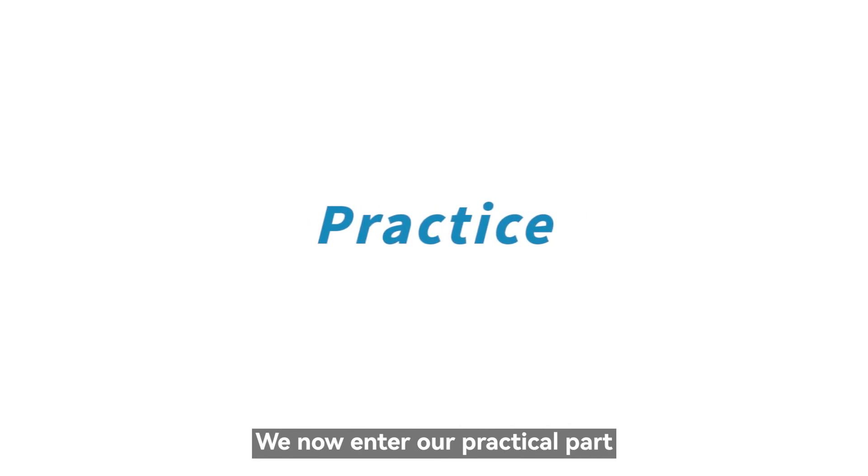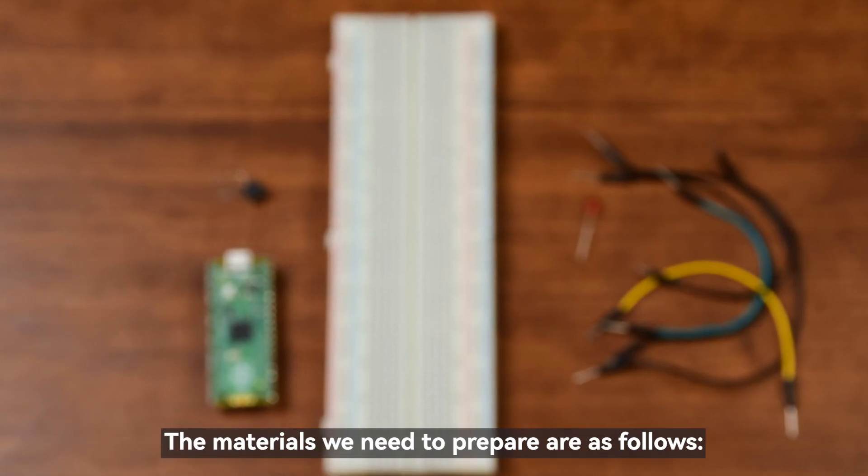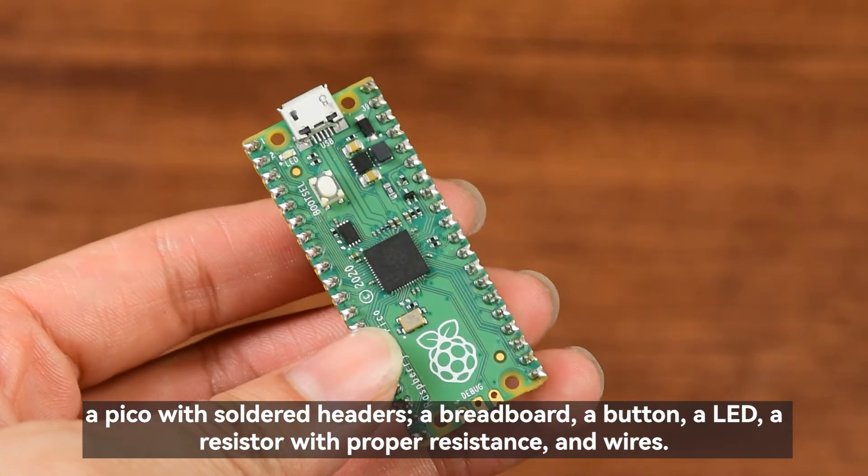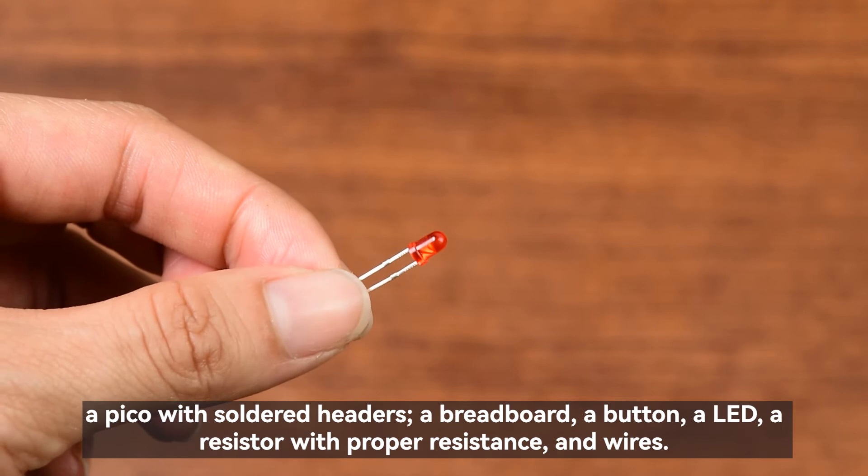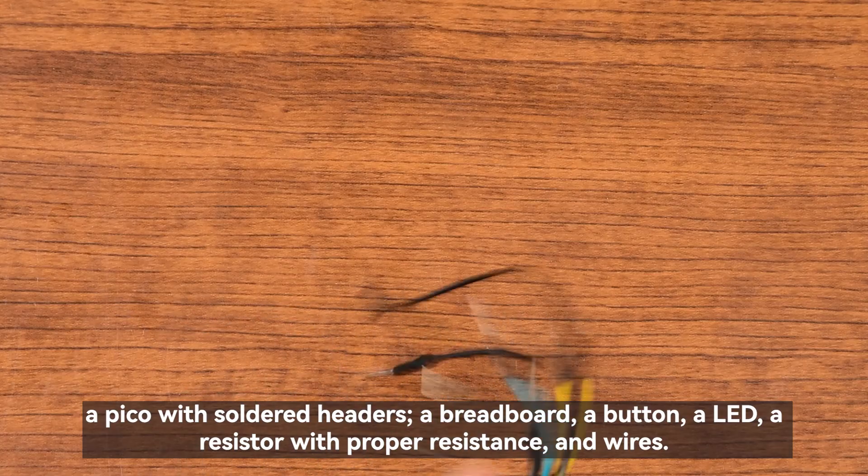We now enter our practical part. The materials we need to prepare are as follows: a Pico with soldered headers, a breadboard, a button, a LED, a resistor with proper resistance, and wires.